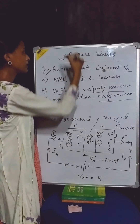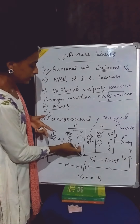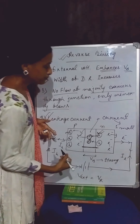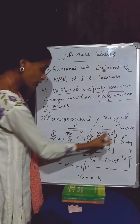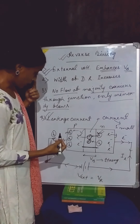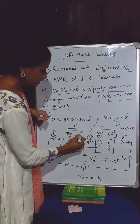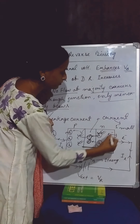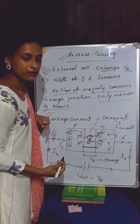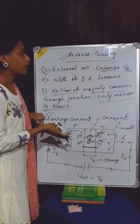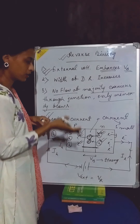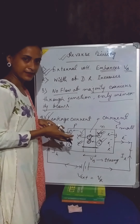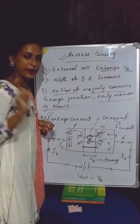So in this way, under the process of reverse biasing, we will get a very small amount of current through the junction area or through the depletion region. And that small amount of current is called leakage current, which is constituted by small numbers of minority carriers in the P-section as well as small numbers of minority carriers in the N-section. So this is all about the process of reverse biasing of a PN junction diode. Till then, take care, stay safe and bye-bye.